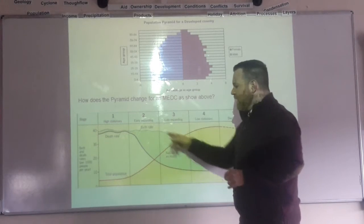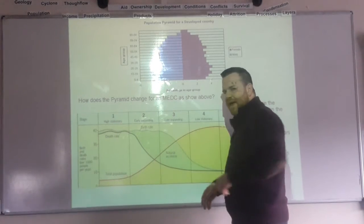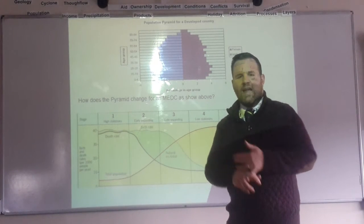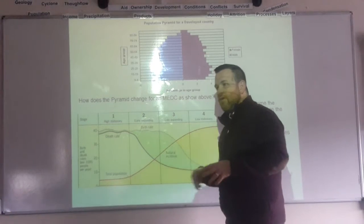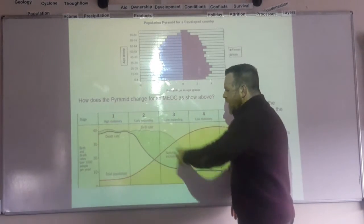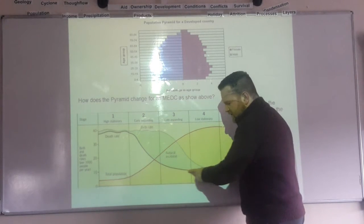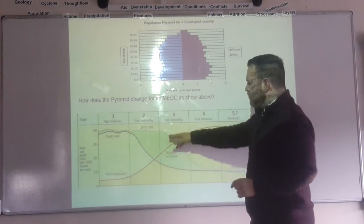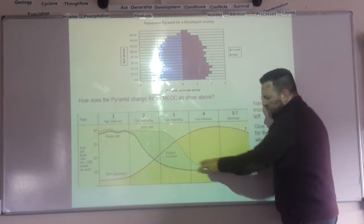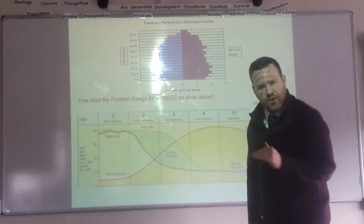Into stage three, you start to see things like the use of contraception being introduced, so the number of babies starts to fall. Or better economic development means people can get jobs, and because they earn their own money, they don't need as many children to work. So the birth rate drops. Because it drops less than the death rate, which has now almost steadied off, your population is still increasing because the birth rate is still higher than the death rate. In stage four, both rates have come right down, so the population starts to plateau.